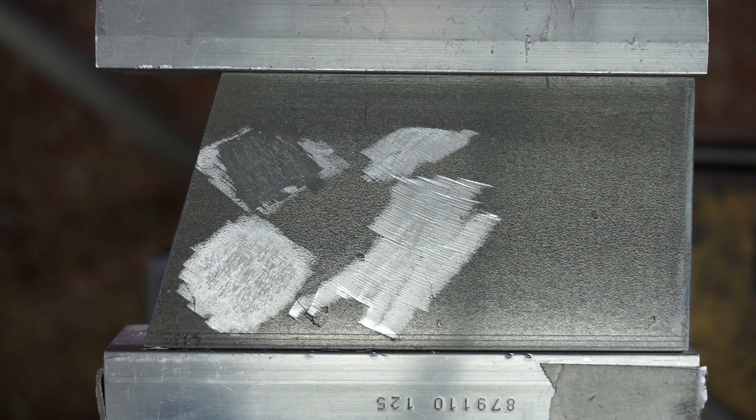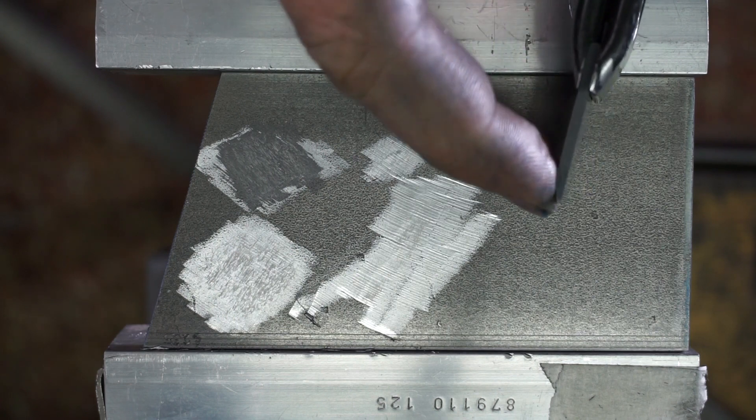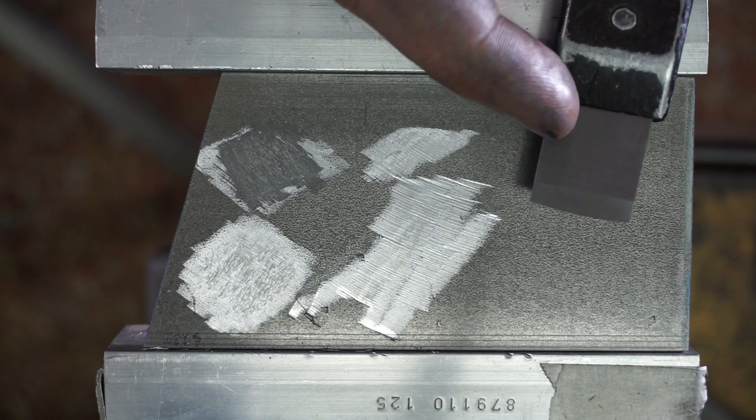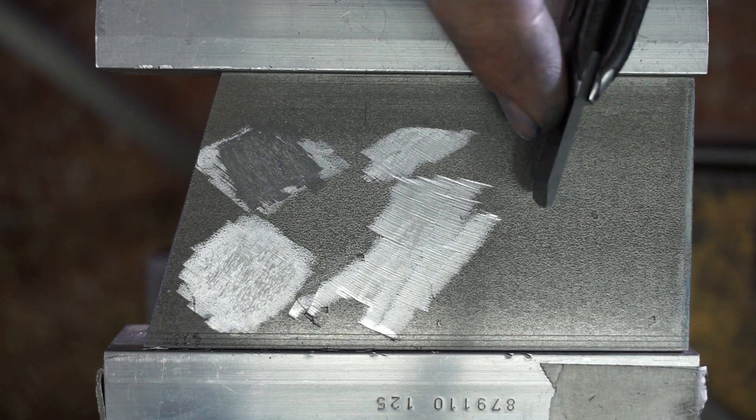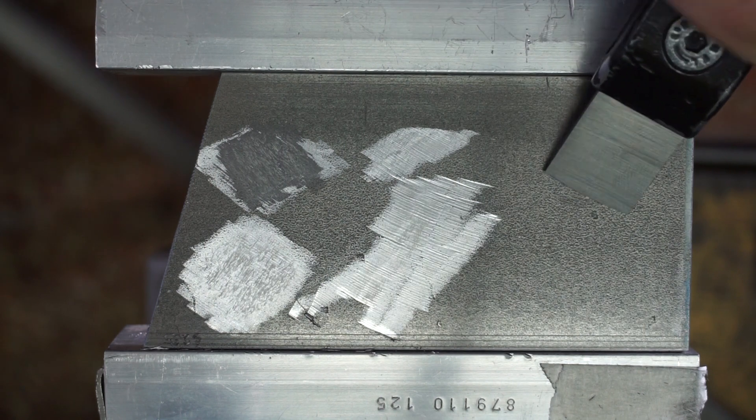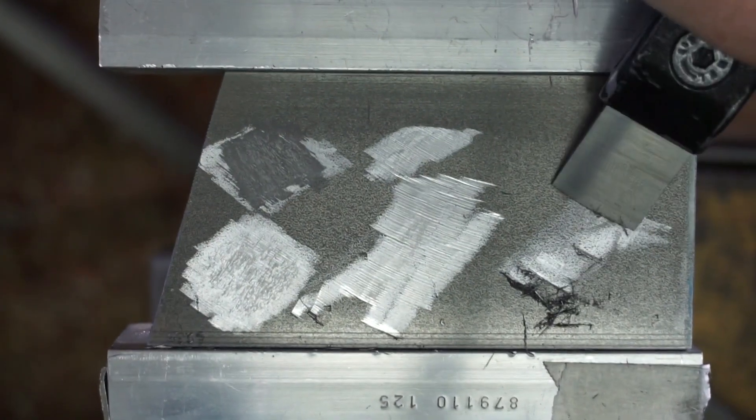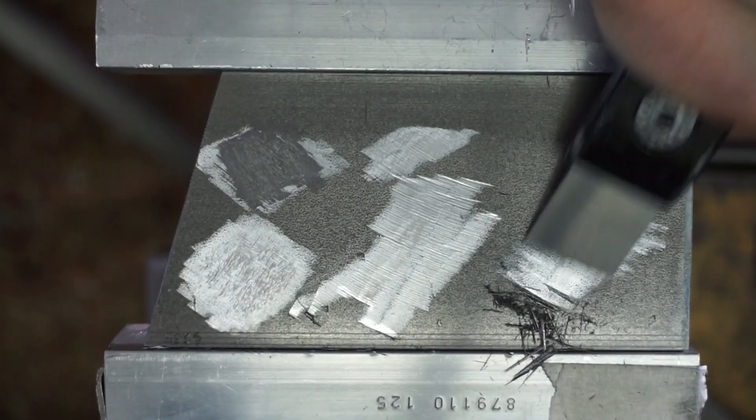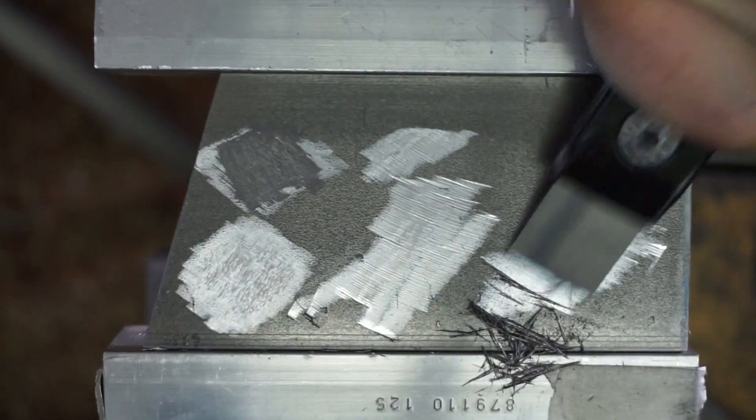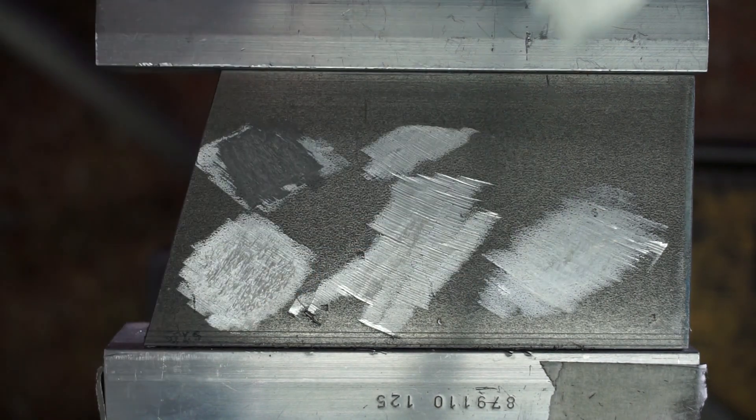And now finally, let's test a positive insert. So swap the insert again. Here we have a 25 degree positive angle relative to this edge here again. But we also have a surface, this one here, which limits the angle with which the insert is digging into the material.